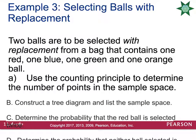Let's look at a similar example using a tree diagram. Two balls are to be selected with replacement from a bag that contains one red, one blue, one green, and one orange ball. With replacement means you draw from the bag, look at the color, then throw it back in. Because we're replacing the ball, all 4 colors are available on each draw, so there are 4 times 4 = 16 possible ways to pull the balls.